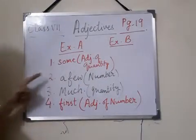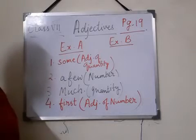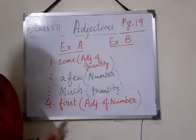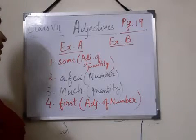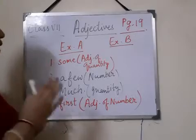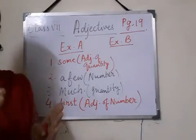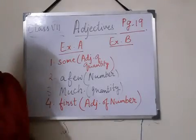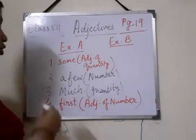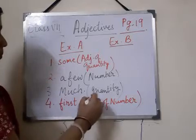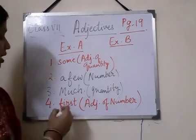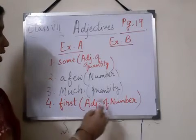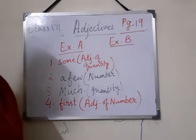So: number 1 is already done; number 2, I have written 'a few' — if you write something else, let me know, but don't write the same word for two different blanks. Number 3, 'much,' adjective of quantity. Number 4, 'first,' adjective of number.